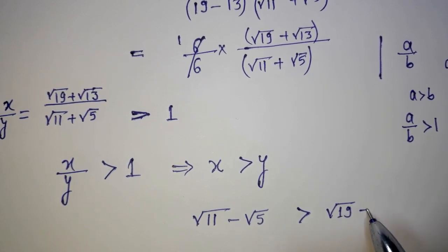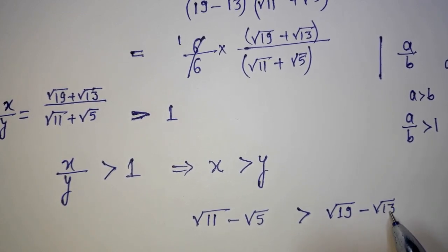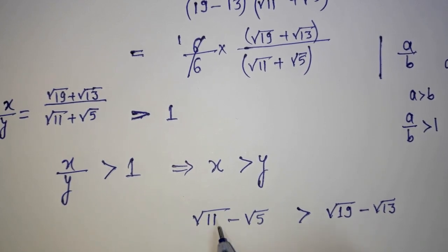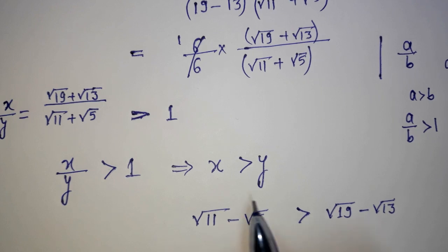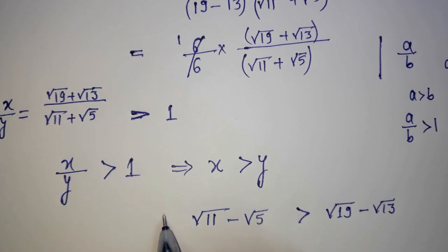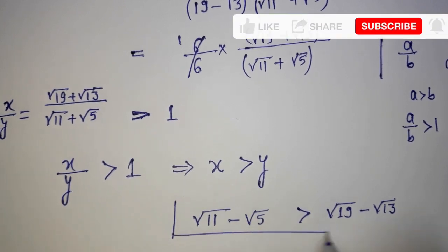And we have considered y as root 19 minus root 13. So this is our solution: root 11 minus root 5 is greater than root 19 minus root 13. This is our answer.